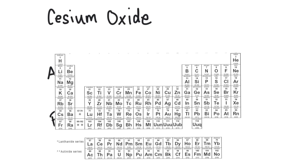Here's how charges work by group on the periodic table. Group 1 forms ions with a +1 charge. Group 2 gives a +2 charge. We'll skip the transition metals for now. Group 3 gives a +3 charge. Group 4 elements generally don't form ions. Group 5 forms ions with a −3 charge. Group 6 gives a −2 charge. Group 7 gives a −1 charge. And the noble gases don't form ions.